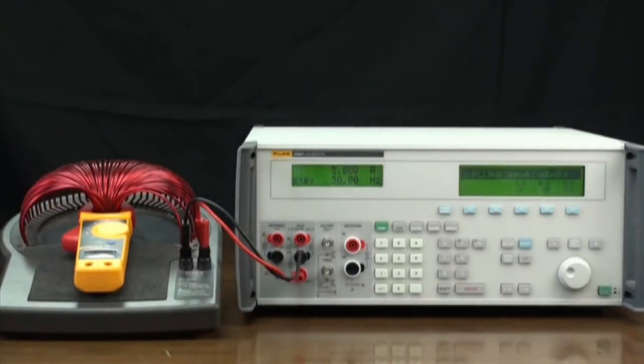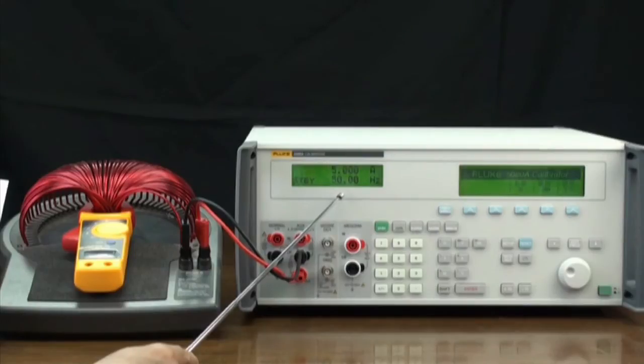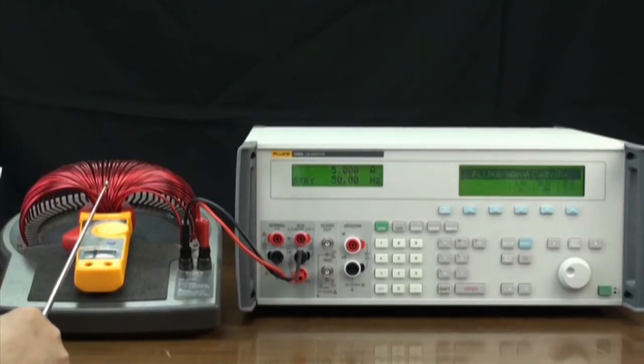As a 50 turn coil is used, the total output is 250 Amps. 5 Amps 50 Hz shows on the main display.